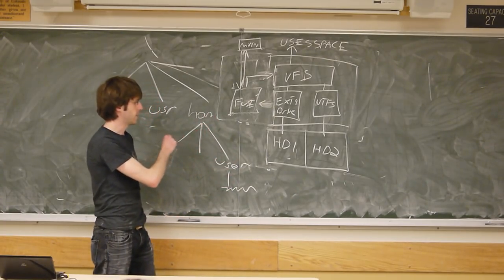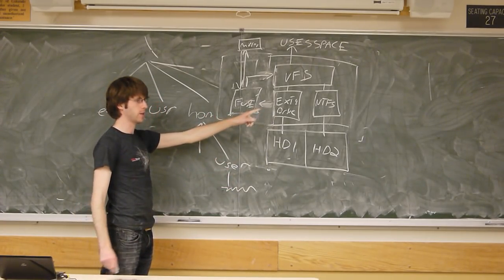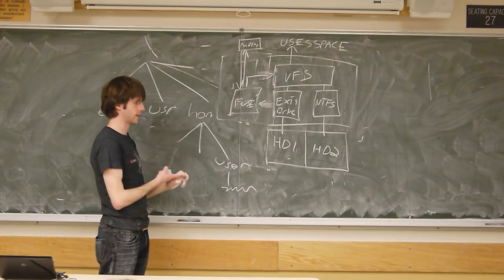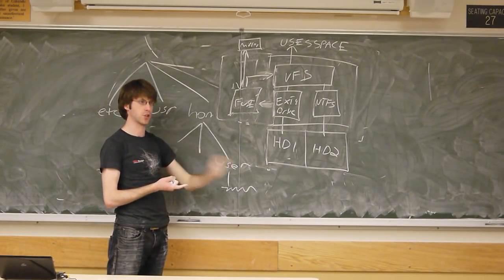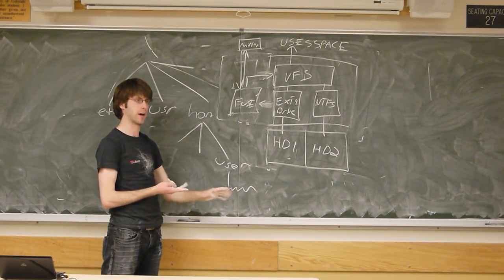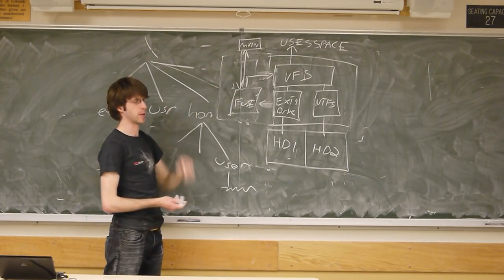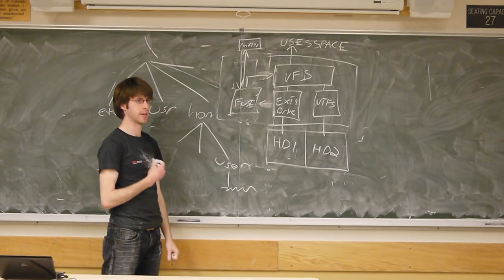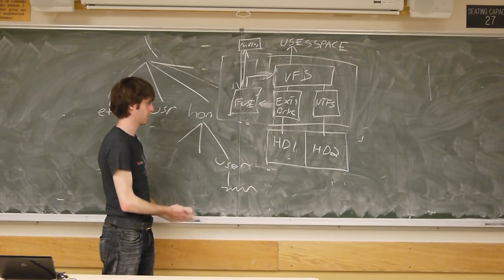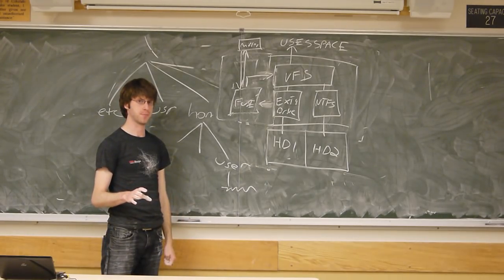Our file system is a little bit different from traditional file systems in that it's a second-level file system — it's actually storing its data on top of a host file system — and we're actually going to be implementing it in user space instead of in kernel space.